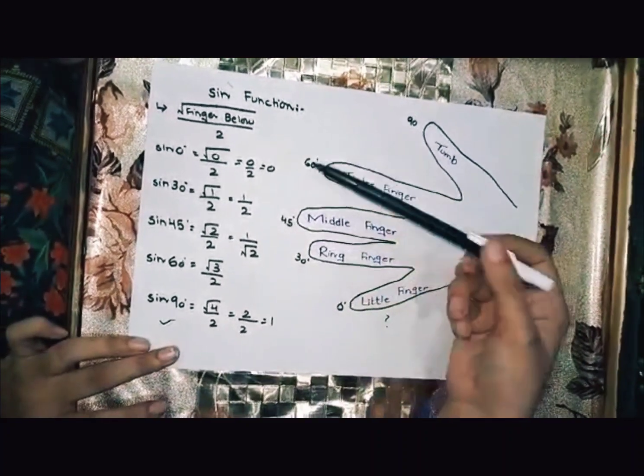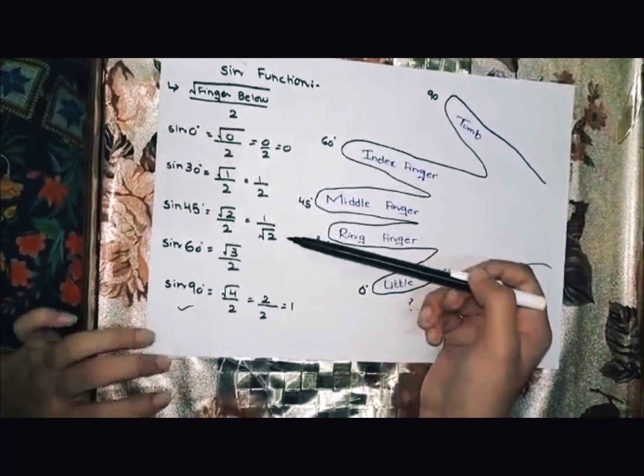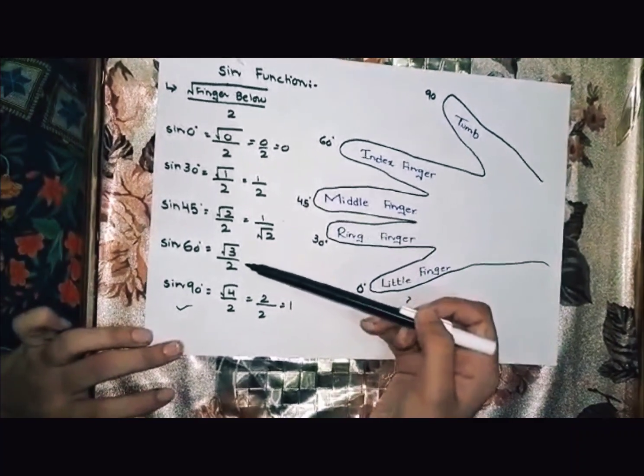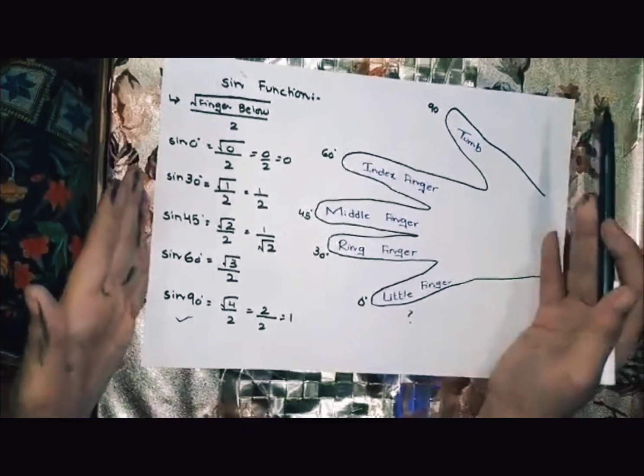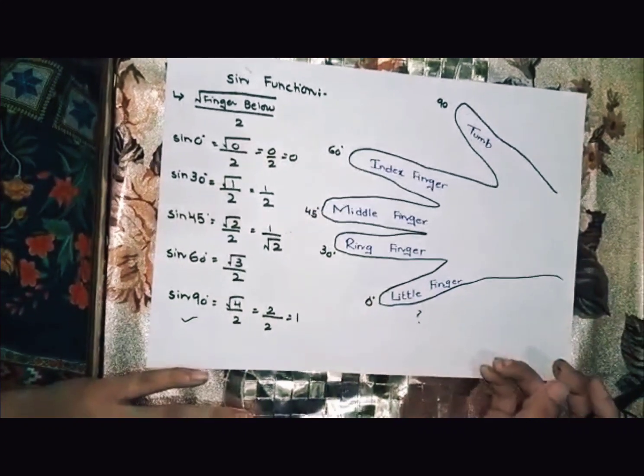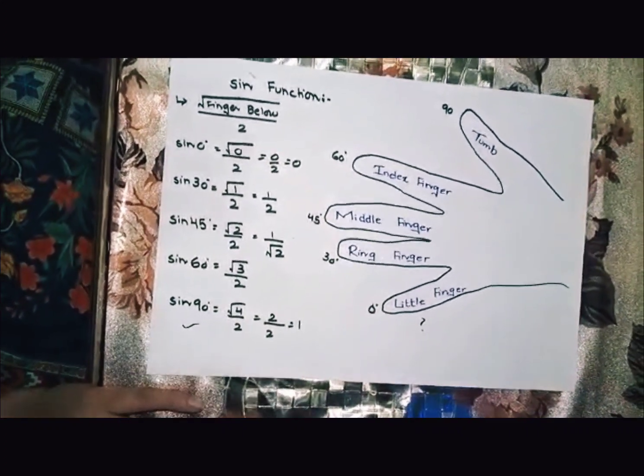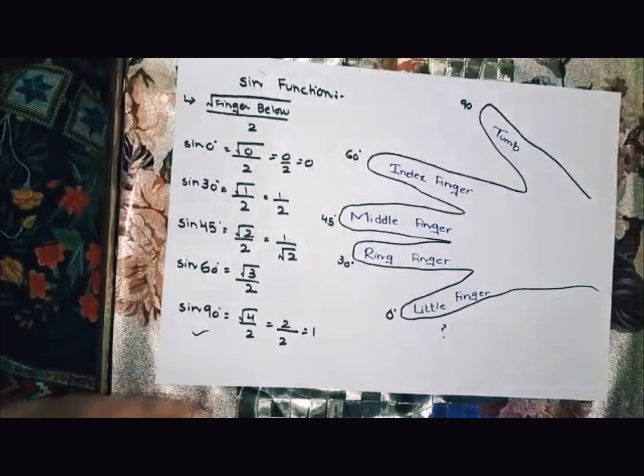This way you have seen that sine 0 equals 0, sine 30 is 1 by 2, sine 45 is 1 over under root 2, sine 60 is under root 3 by 2, and sine 90 is 1. In some seconds we used this trick to find trigonometric values. Next we will find cos in the next video, inshallah.